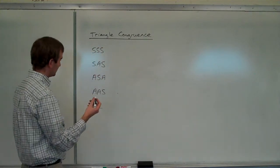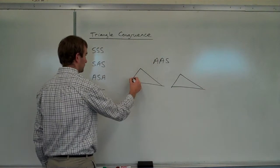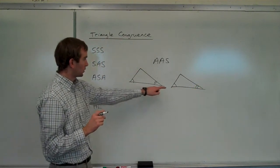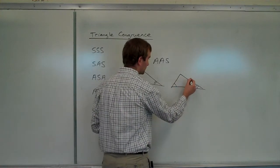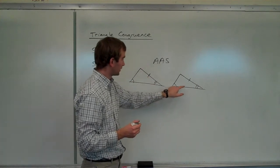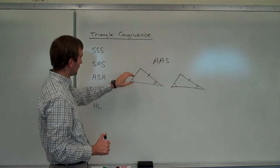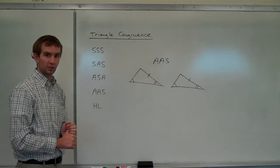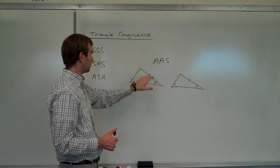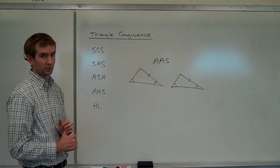Next up we have Angle-Angle-Side. We get two triangles and we know this angle is congruent to that angle, this one is congruent to this one, and now we have a side — but it's not a side in between; it's one of the other sides. Angle-Angle-Side turns out to be enough to define the triangle also. You would know these two triangles have to be congruent. Take a protractor and ruler, figure out the two angles and the side length, and try to draw another triangle with those same pieces of information but different — you won't be able to.